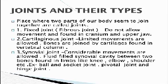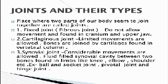Now what are joints? When two parts of our body seem to join together, that is called a joint. There are three types of joints: fixed joint, also known as fibrous joint; cartilaginous joint; and synovial joint. Fixed joints, as the name suggests, do not allow movement and are found in the cranium and upper jaw. Cartilaginous joints allow limited movement; bones are joined by cartilage, found in the vertebral column. Synovial joints allow free movement with a fluid-filled synovial cavity between two bones, found in limbs like knee, elbow, and shoulder.